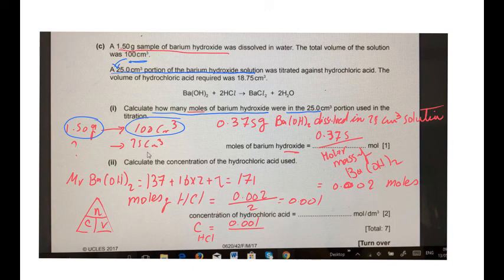So, we will make this multiplication because 1.5 was dissolved in 100. So, x grams are dissolved in 25. You will get the mass in grams, 0.375 grams of barium hydroxide dissolved in 25 cm³ of solution.